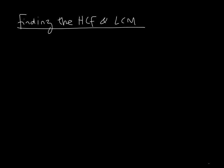This is one way in which you can calculate the highest common factor HCF and lowest common multiple LCM of a pair of numbers. Let's start with an example. We're going to find the highest common factor and lowest common multiple of 30 and 42.